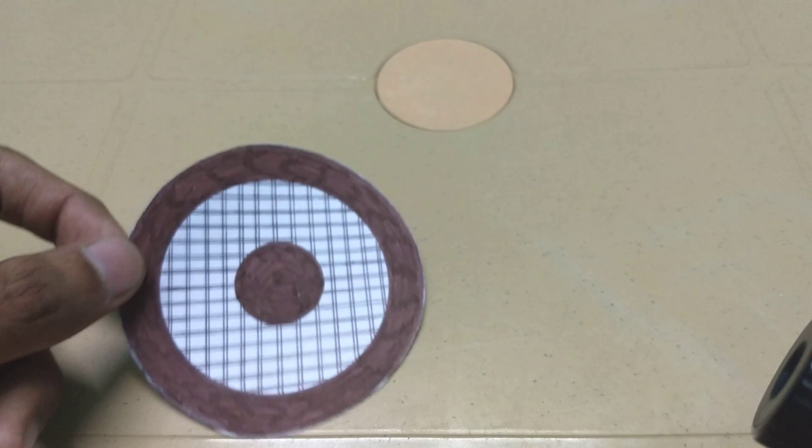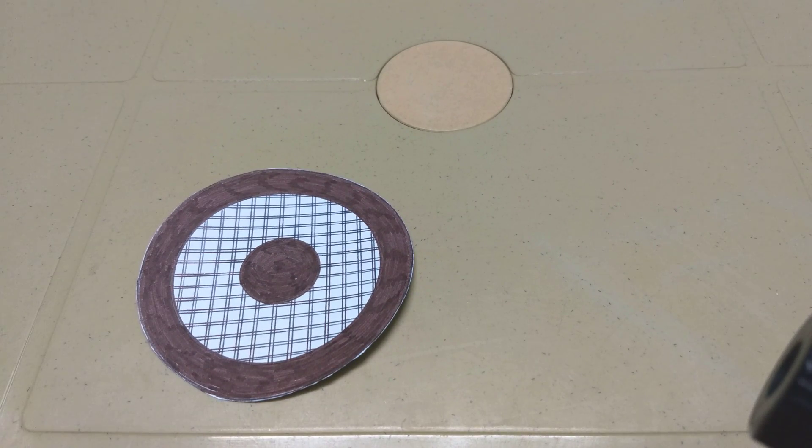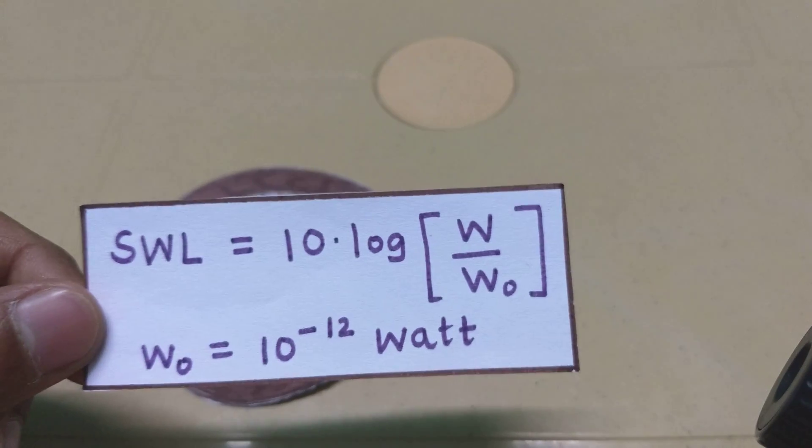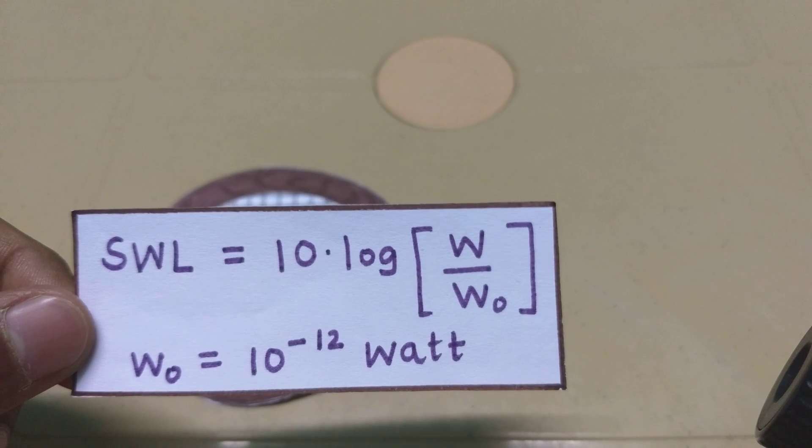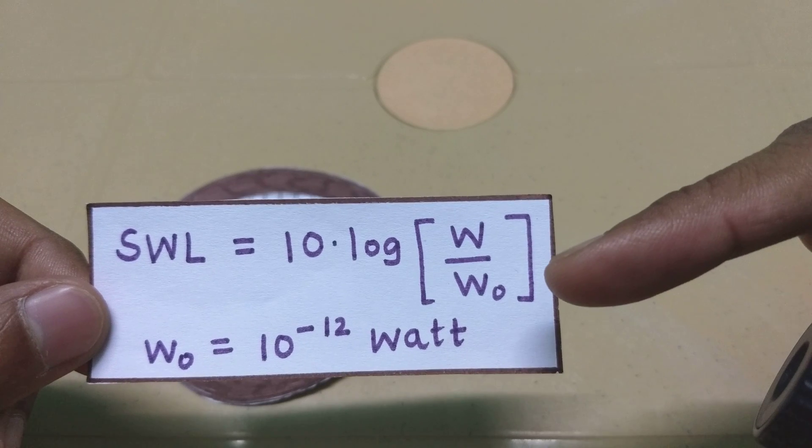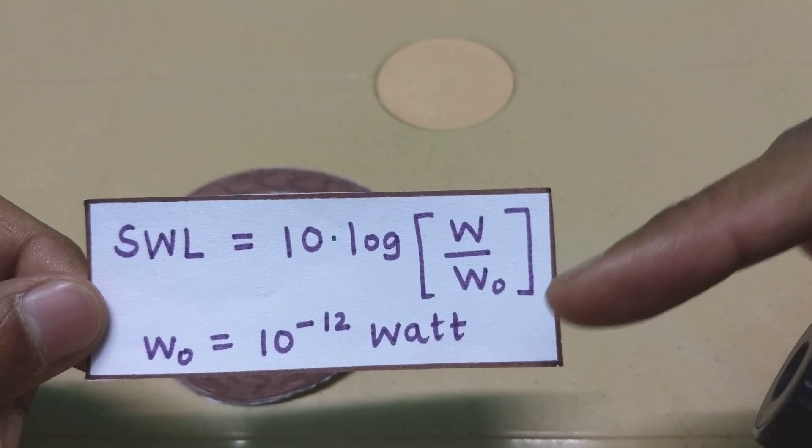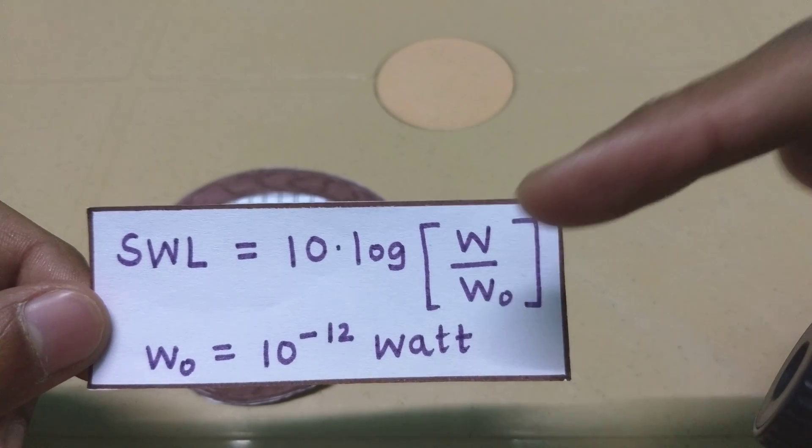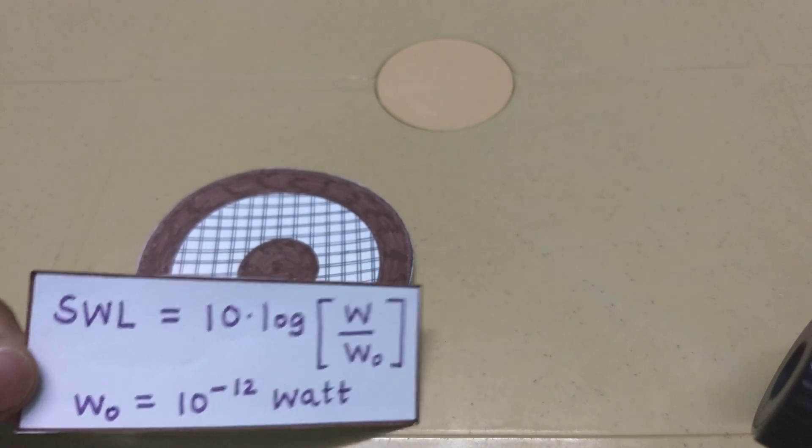In order to compute the sound power level of a speaker, this is the equation you gotta use. You gotta plug in the power in watts of the speaker over the reference power, which is 10 to the negative 12 watts. And plug it in and you can get the sound power level of a speaker.